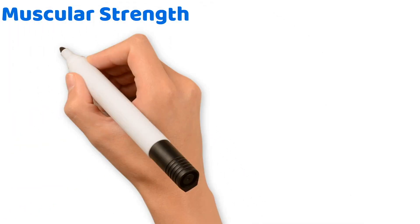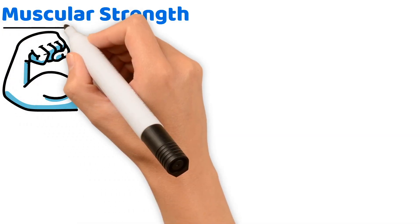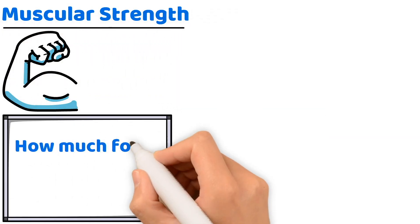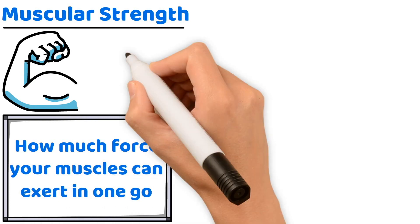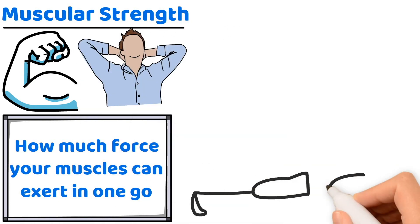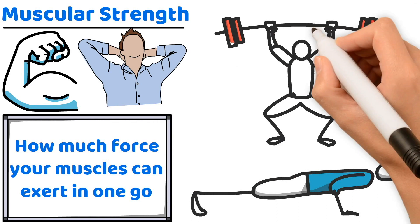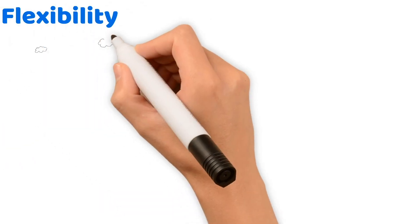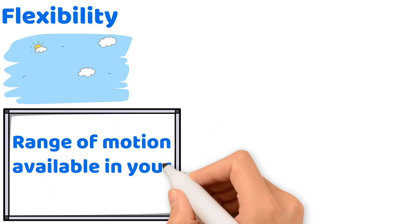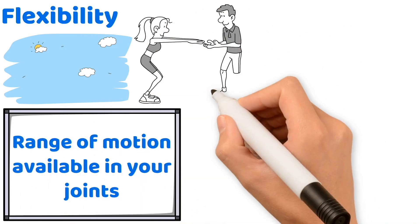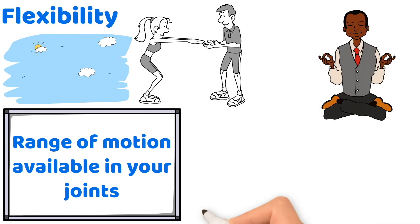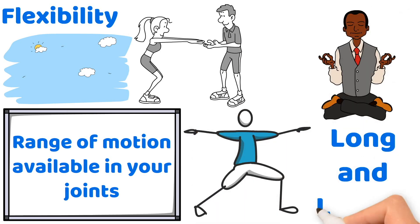Muscular strength is all about how much force your muscles can exert in one go. Think about the satisfaction of completing that final push-up or lifting a personal best in weightlifting. Flexibility is the range of motion available in your joints — it's essential for overall fitness and injury prevention. Incorporate yoga and stretching routines to keep those muscles long and limber.